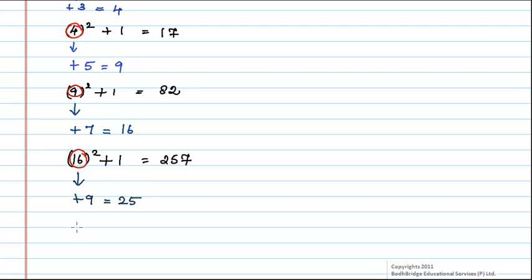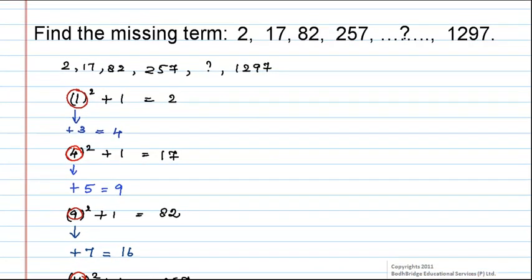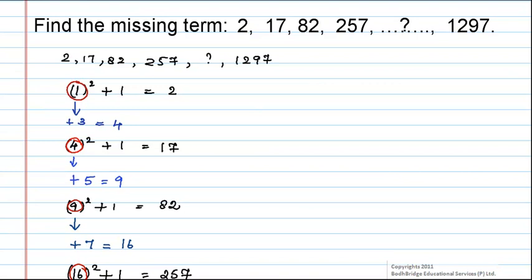Therefore we can find the square of 25 and add 1 with it. We will get 625 plus 1 which is equal to 626. Hence the term next to 257 is 626.